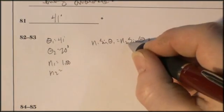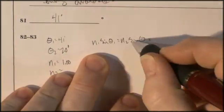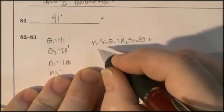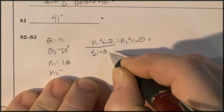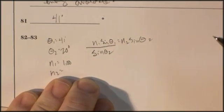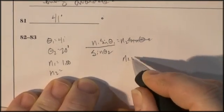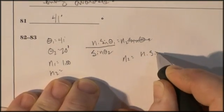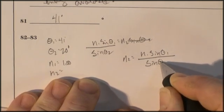I don't know what I'm going into, and that's what we're looking for. So I'm looking for N2. I've got the formula: N1 sine theta 1 equals N2 sine theta 2. I want to get N2 by itself. I divide both sides by sine of theta 2. Here's my equation: N2 equals N1 sine theta 1 divided by sine theta 2.